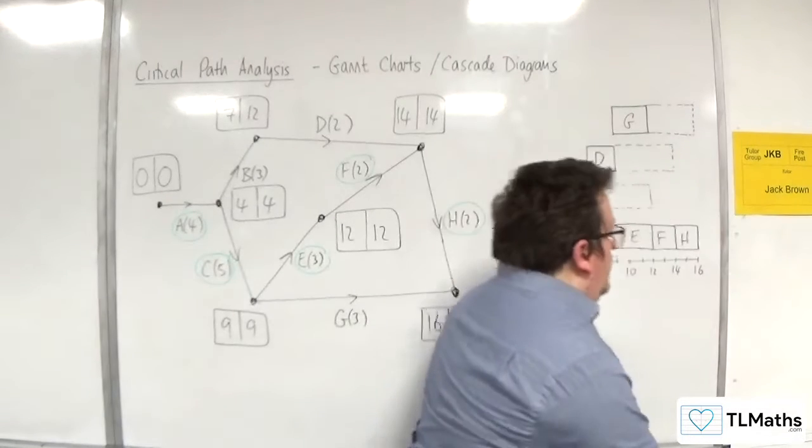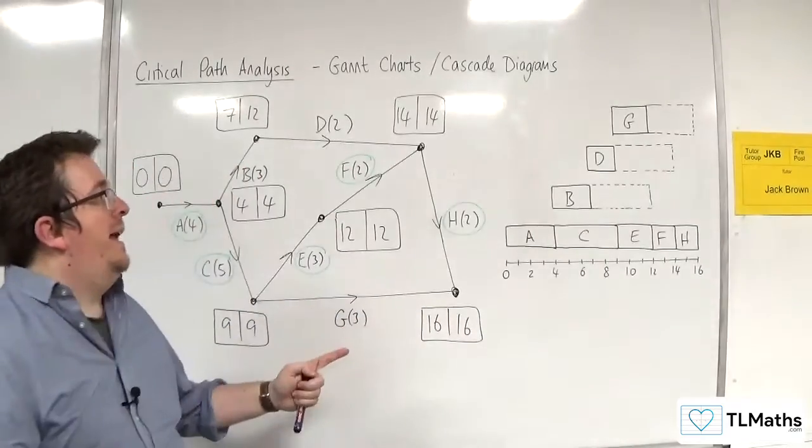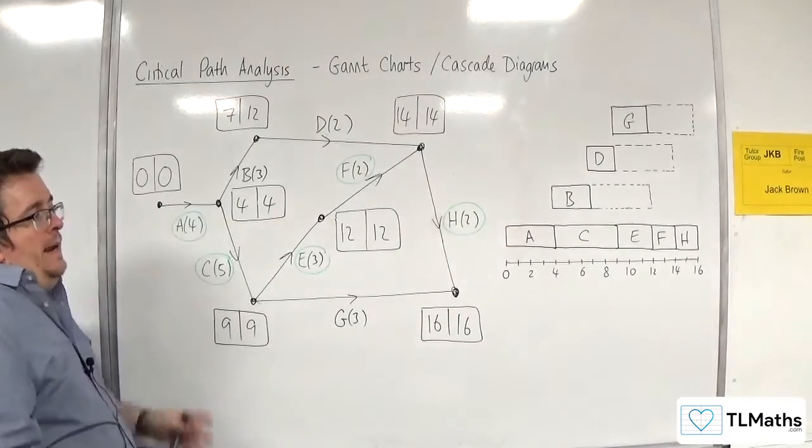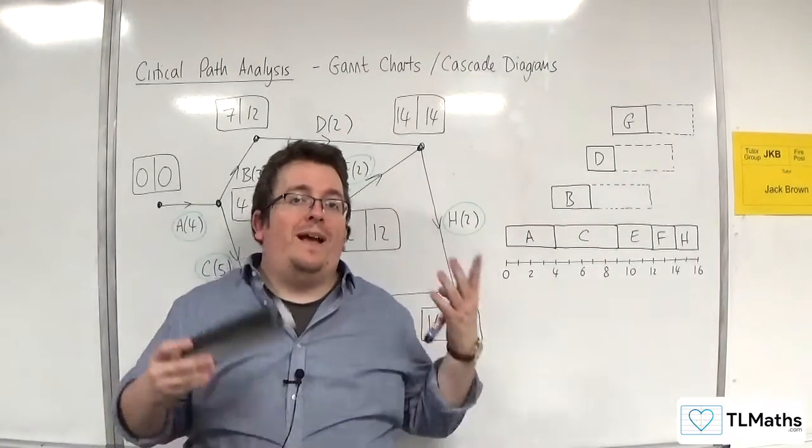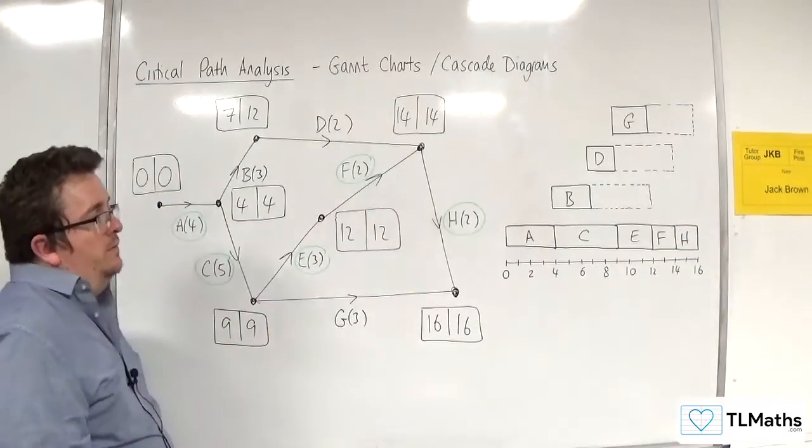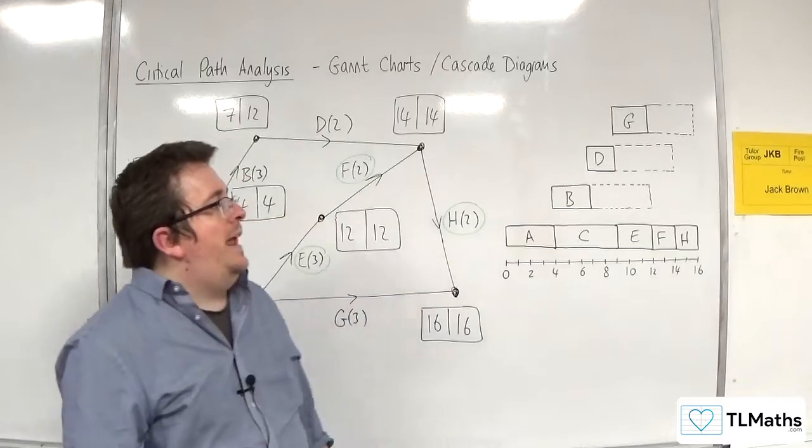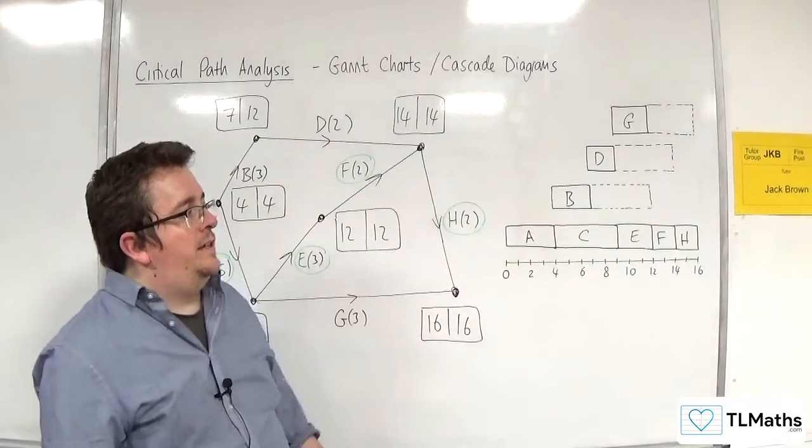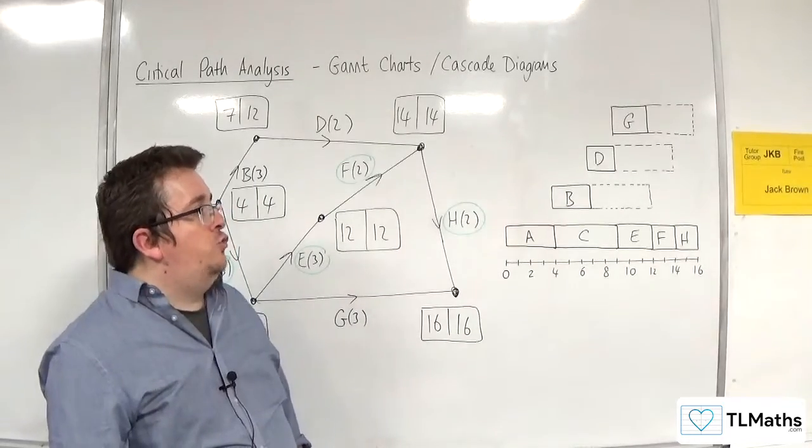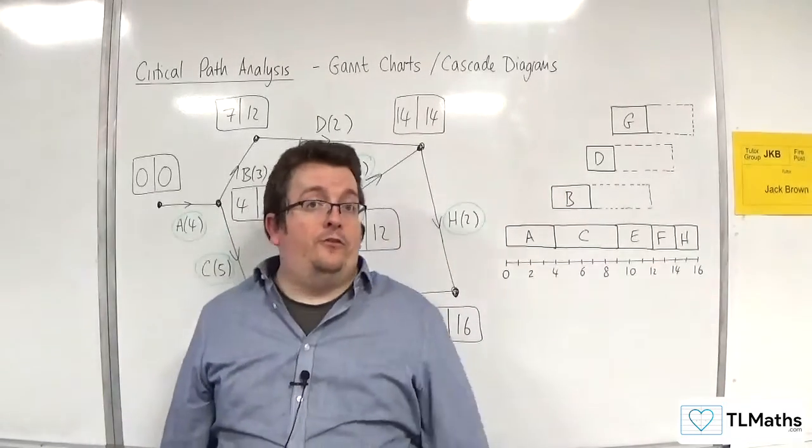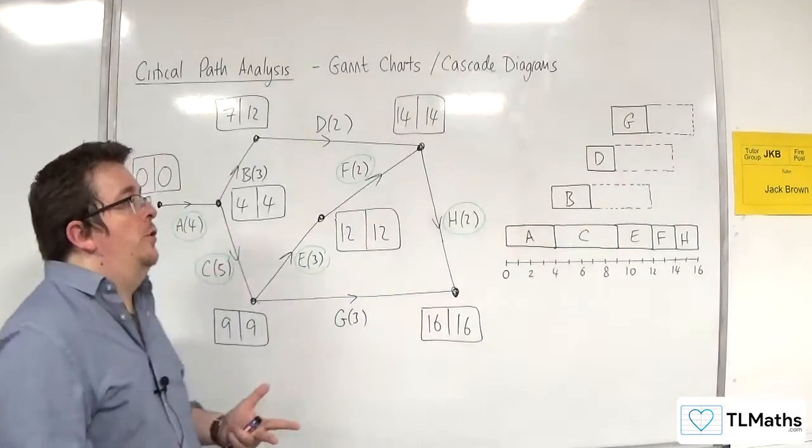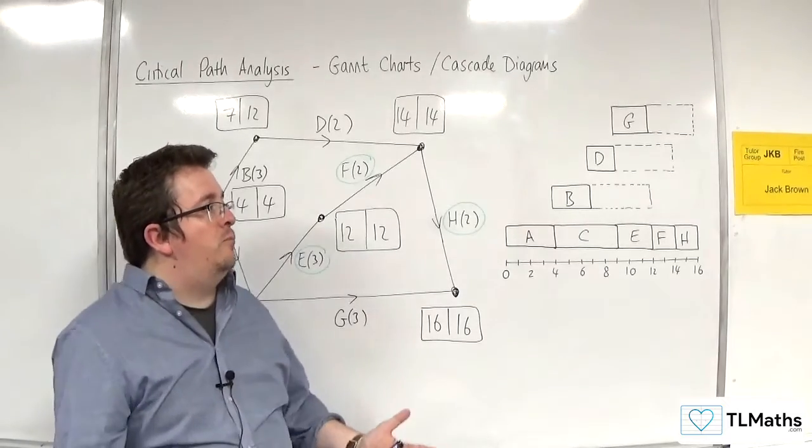So in the previous video, we drew this Gantt chart or cascade diagram based on this activity network. In this video, I want to introduce you to what's referred to as a resource histogram. Essentially, it takes the Gantt chart or cascade diagram and then starts to allocate when activities need to take place or when they should take place and tries to fit it in, so we have as few workers working on the project as possible, because obviously we don't want to have an unnecessary amount of workers on the project.